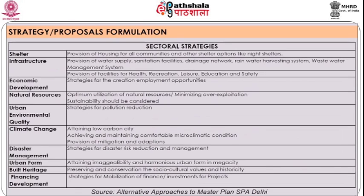The strategies and proposals are worked out for various sectors. For shelter, it would be provision of housing for all communities and provision of other shelter options like night shelters. For the physical infrastructure sector, strategies can be provision of adequate water supply, sanitation facilities, drainage networks, wastewater networks, solid waste management facilities, power supply, as well as alternative and renewable sources of power supply and rainwater harvesting.